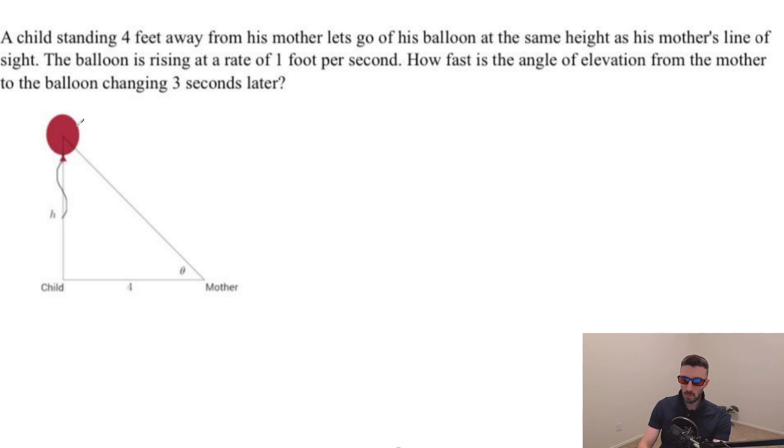So this picture is a little misleading the way it is right now. The way it really should have been drawn is that we remark that the balloon was originally down here with the child, and then he lets go of it at the same height as his mother's line of sight.